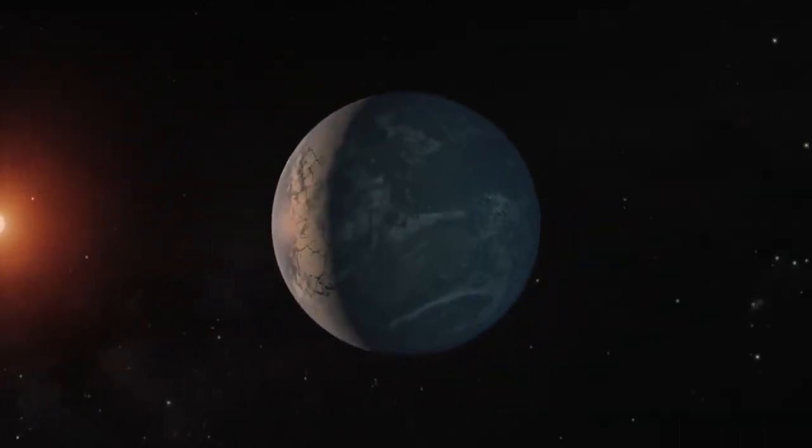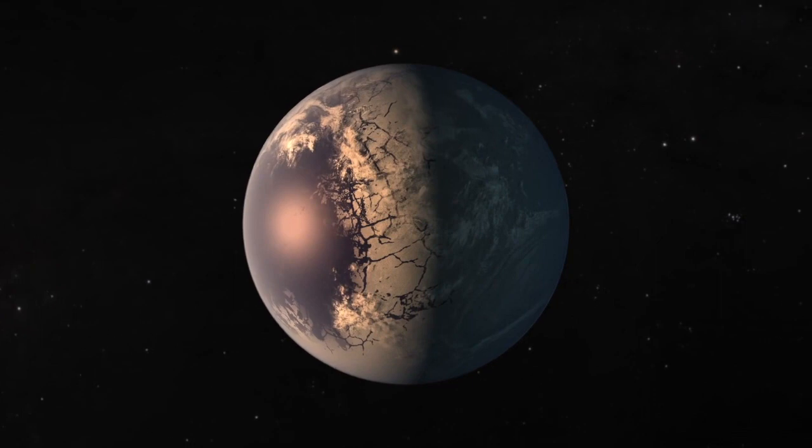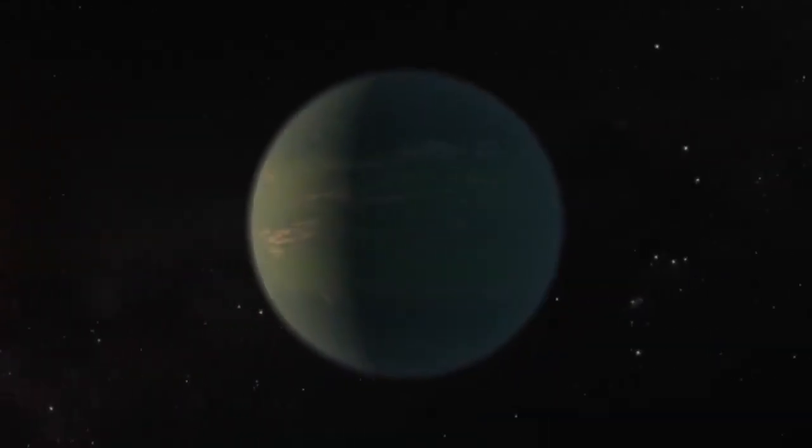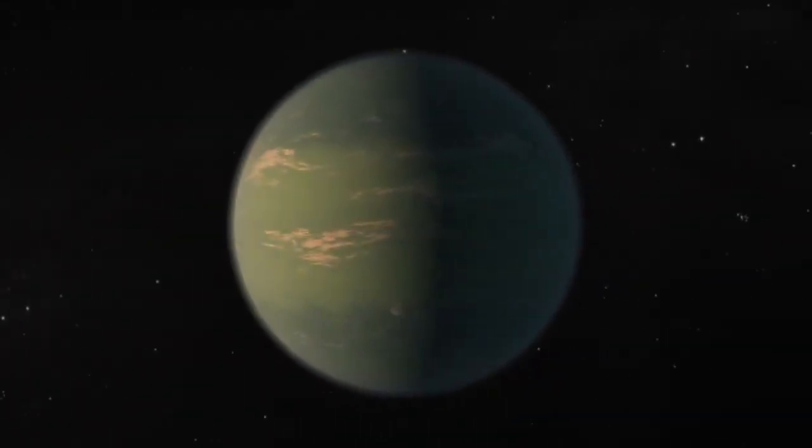The final two planets in TRAPPIST-1's habitable zone are TRAPPIST-1f and TRAPPIST-1g. These planets likely have thick steam atmospheres, but only further study will confirm.